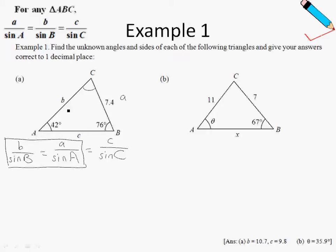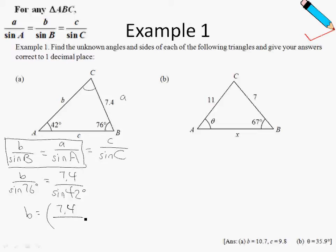Let us fill in the blanks one by one. Side B is unknown; angle B is 76 degrees. So B over sine of 76 degrees equals 7.4 over sine of 42 degrees. To find B, I just multiply sine 76 over to the right-hand side. Press this in your calculator, and if you round it off to one decimal place, you will have 10.7.